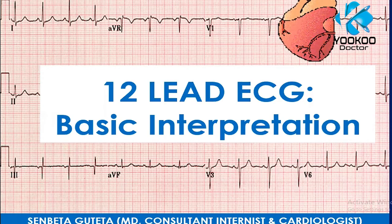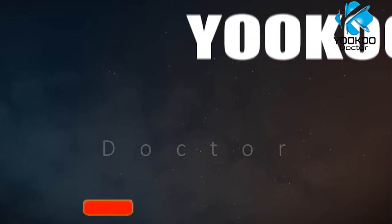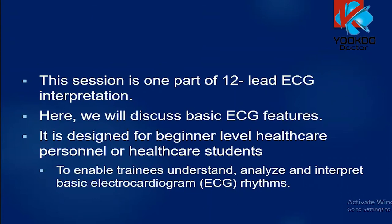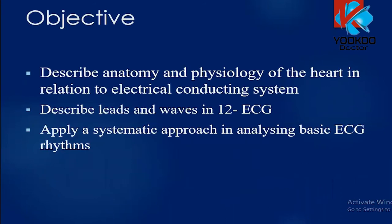Today we will discuss 12-lead ECG, focusing on basic interpretation. This session is one part of a 12-lead ECG course where we will discuss the basic features of ECG. This course is designed for beginner-level healthcare personnel or healthcare students, but others who want to refresh their knowledge can also benefit. The objectives are to describe anatomy and physiology of the heart in relation to the electrical conducting system, describe the leads and waves in 12-lead ECG, and to apply a systematic approach in analyzing basic ECG rhythms.